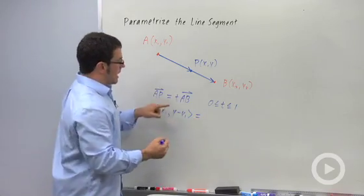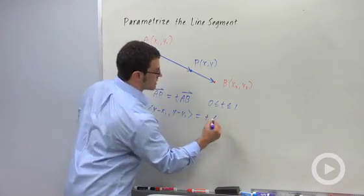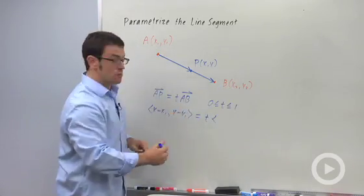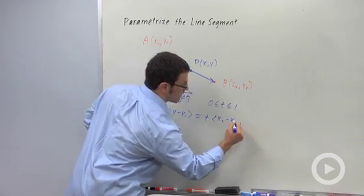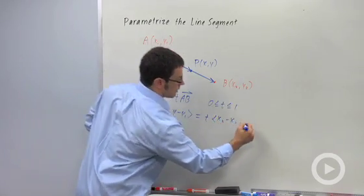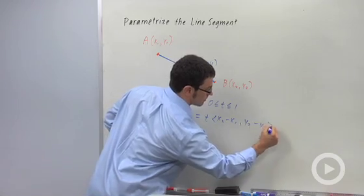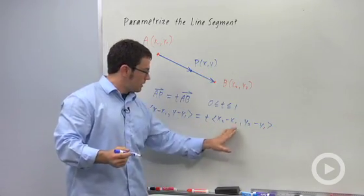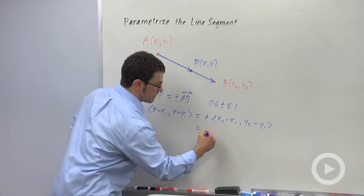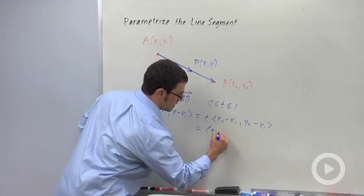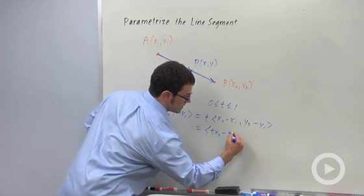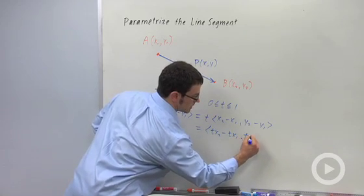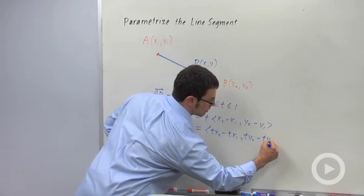And AB has components x2 minus x1 and y2 minus y1. So I have a scalar multiplication here. I'm going to multiply the T through and I get T x2 minus T x1, T y2 minus T y1.